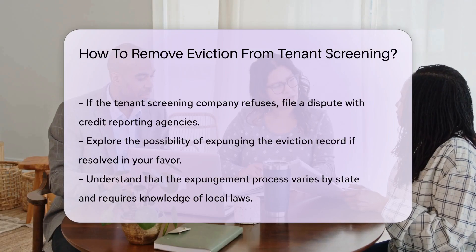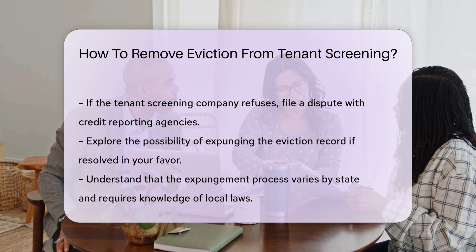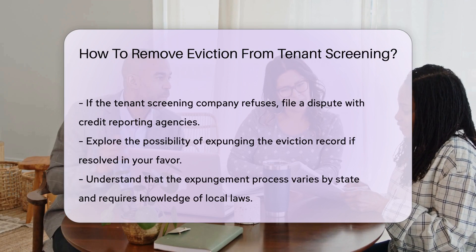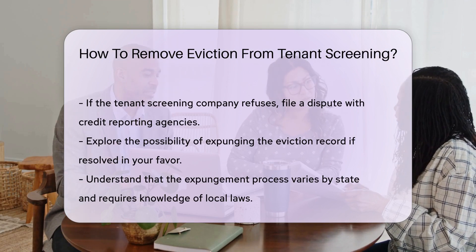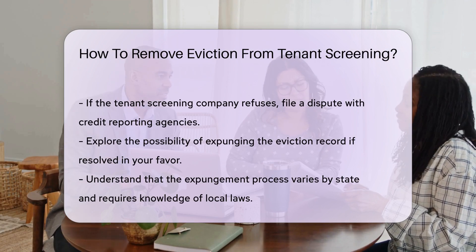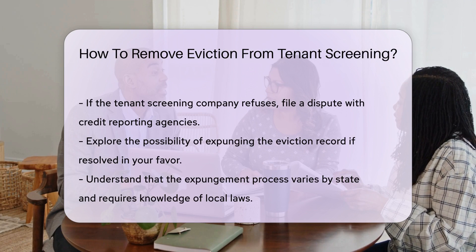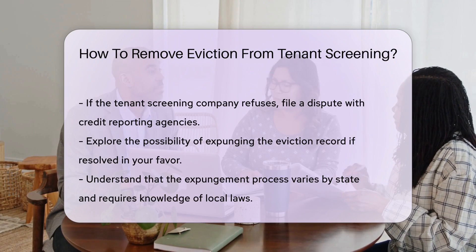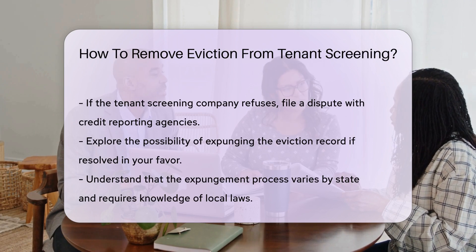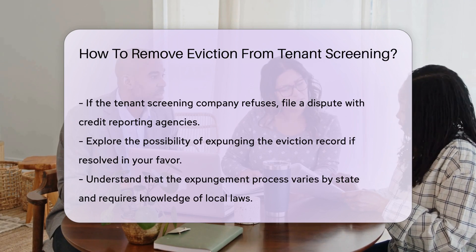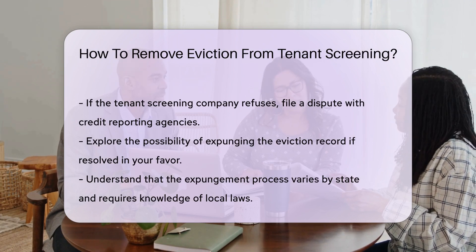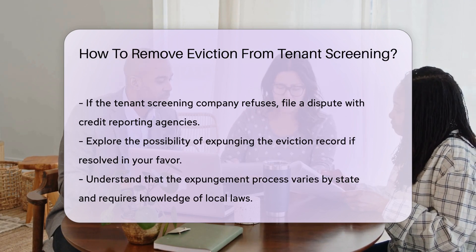Next, contact the tenant screening company that reported the eviction. Request that they correct or remove the entry based on your findings. If they refuse, you can file a dispute with the credit reporting agencies.